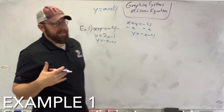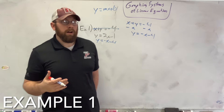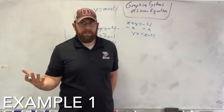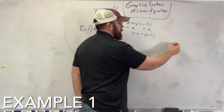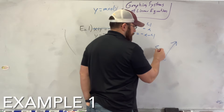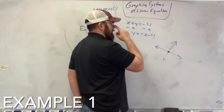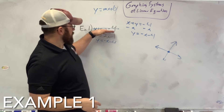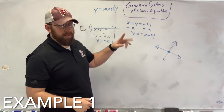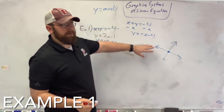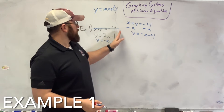A system of linear equations are two equations that have one answer, usually. They're two lines that, when you graph them, will meet somewhere, and that point will be an answer for both equations. There are other ways to solve it that we'll learn later — substitution, elimination, and addition.